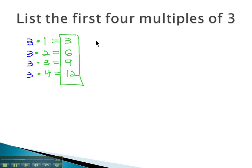3, 6, 9, and 12 then are the first 4 multiples of 3, the first 4 numbers that are divisible by 3.